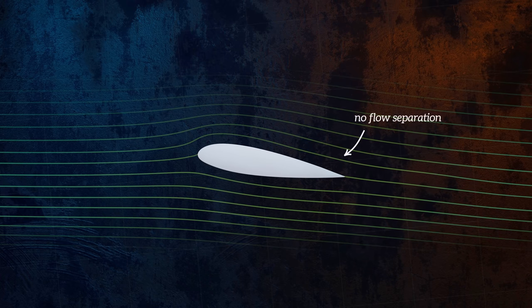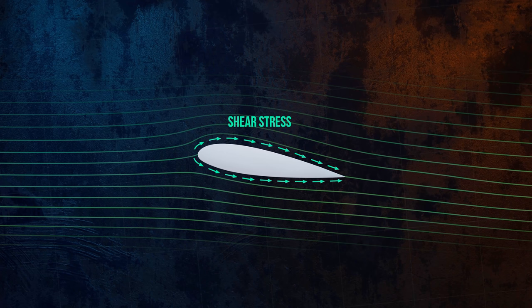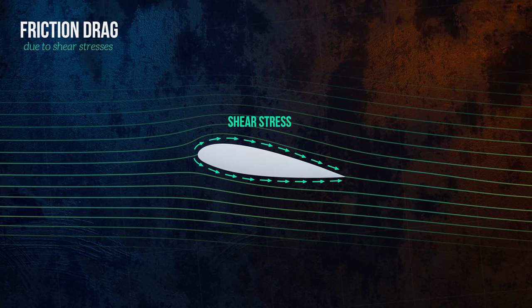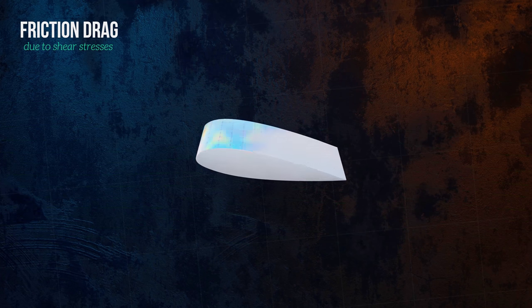For bodies like these, it's the wall shear stresses which contribute most to the total drag force. The drag component caused by these stresses is called friction drag. Friction drag increases with the viscosity of the fluid and is most significant for bodies which have a large surface area aligned with the direction of flow.